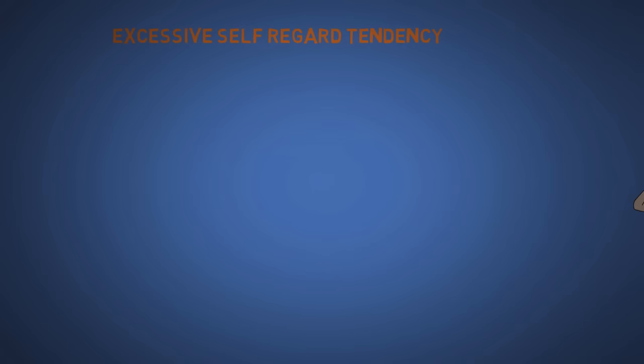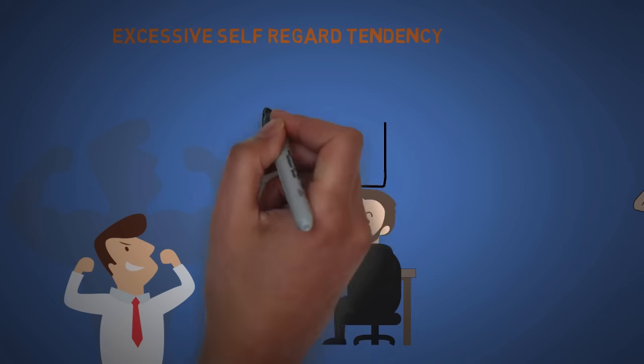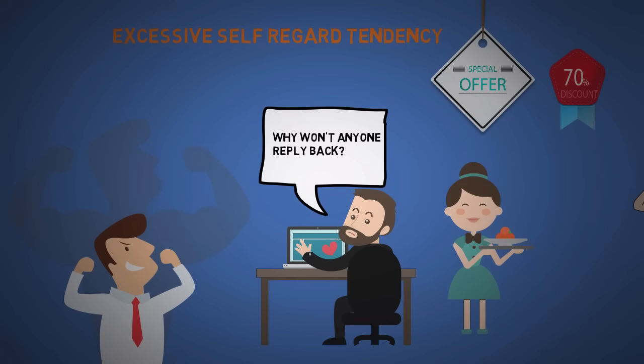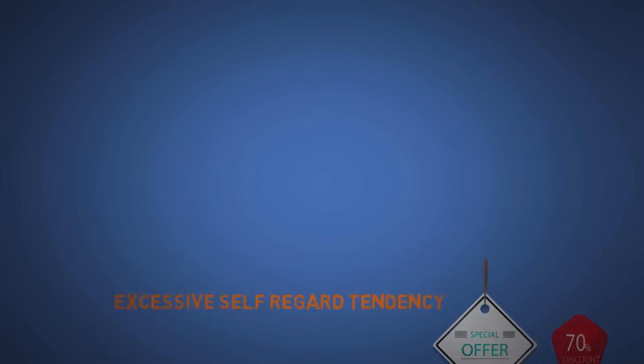The twelfth is excessive self-regard tendency. People tend to think highly of themselves. Most people in online dating sites think they're more attractive than they really are. So when persuading people, make them feel special and that just for them, you're going to give them a big discount or something. But it doesn't even have to be big. There's a study that shows how waitresses can increase their tips by simply using mints. I'll put a link to an article in my descriptions.